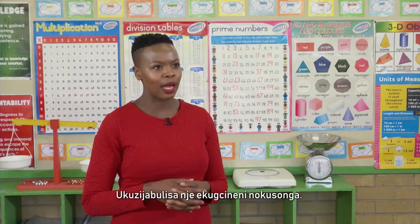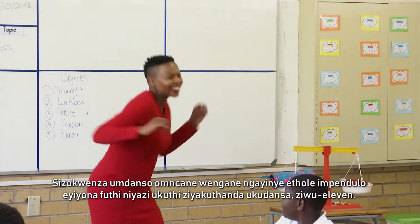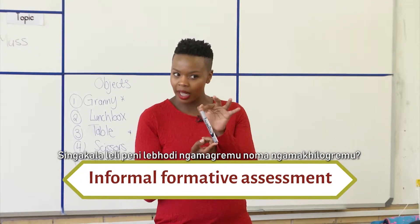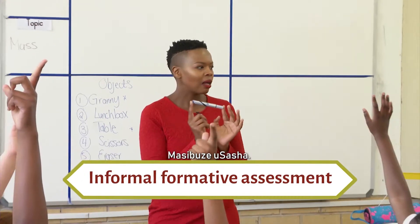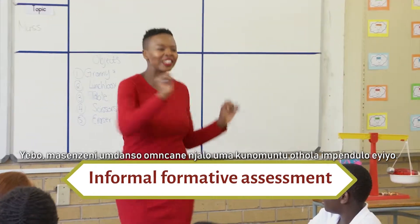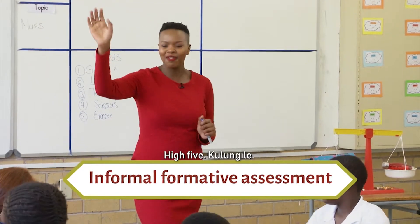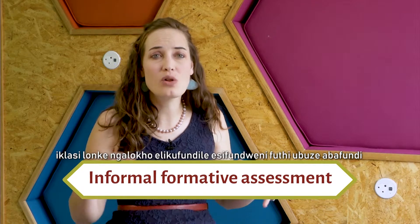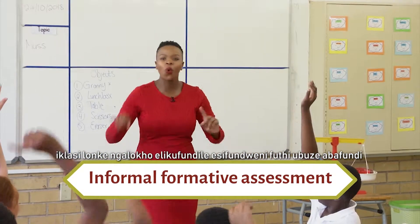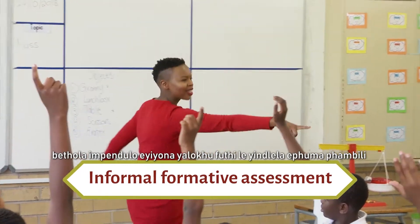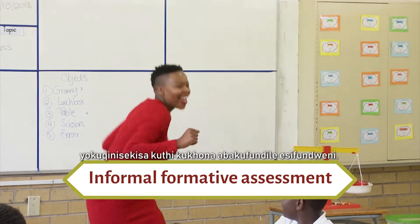Just to have fun at the end and wrap it up, we did a little dance for every child who got the answer correct. They love dancing — they're 11. Would we measure this whiteboard marker in grams or kilograms? Let's ask Sasha. Every time somebody gets the answer right, we do a little dance. High five! At the end of the lesson, Ms. Boetze did a formative assessment asking the whole class what they had learned, and the class did a dance in celebration when learners got it correct. That was a great way to affirm learners that they had learned something during the lesson.